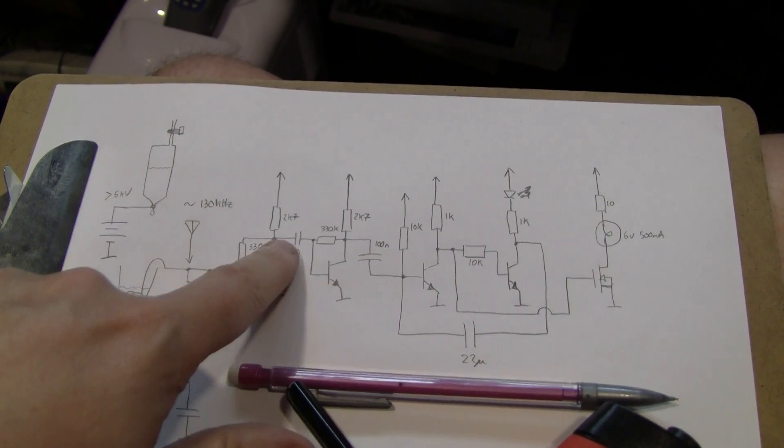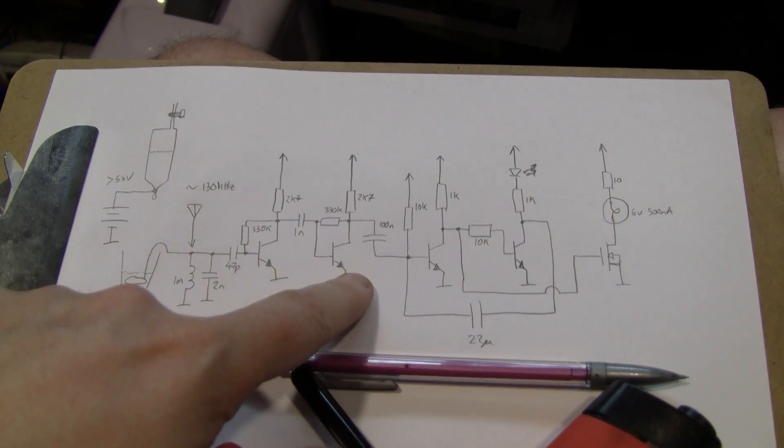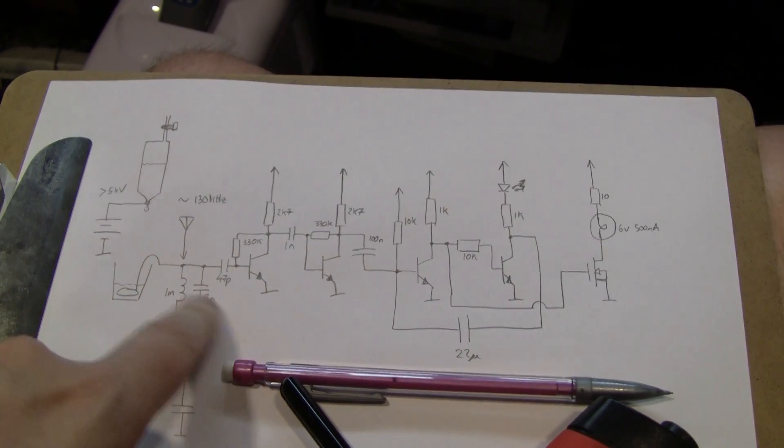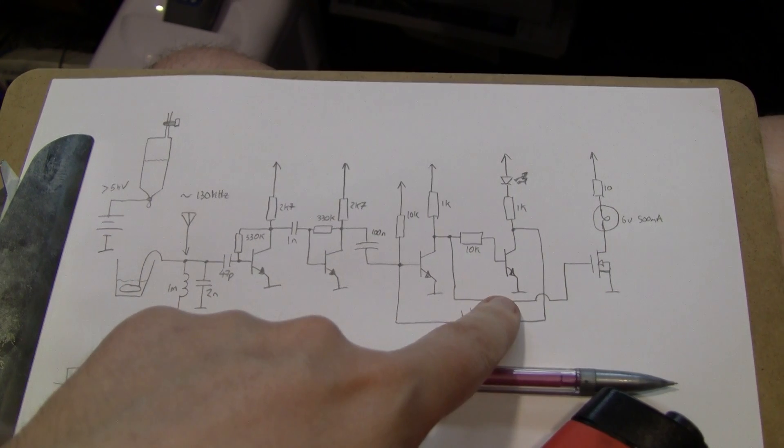So two amplifiers, don't pay too much attention to the values, they're again bench sweepings whatever I had lying around so they're not optimal. But tank circuit, RF amplifier, RF amplifier and then we've got a monostable.